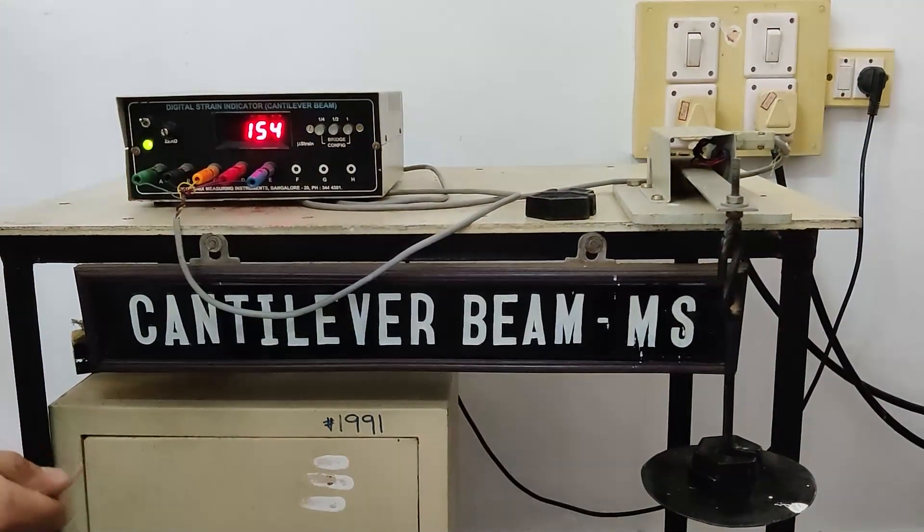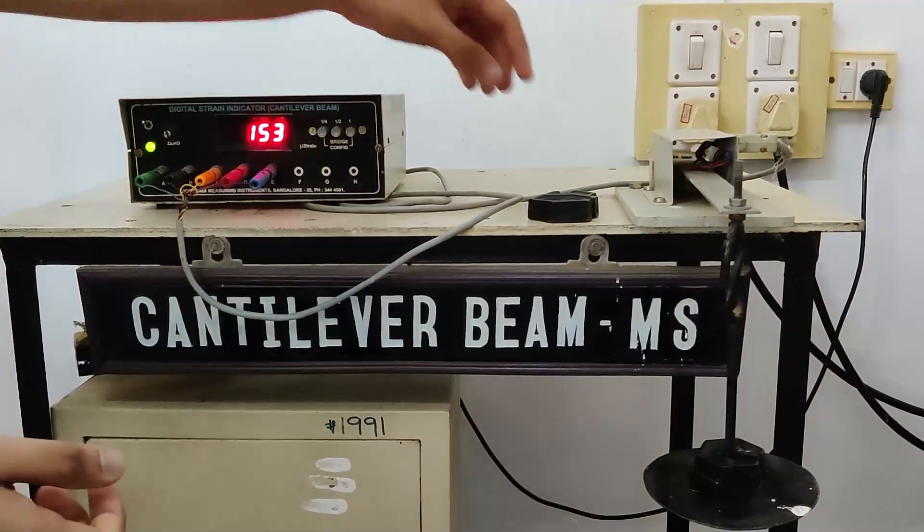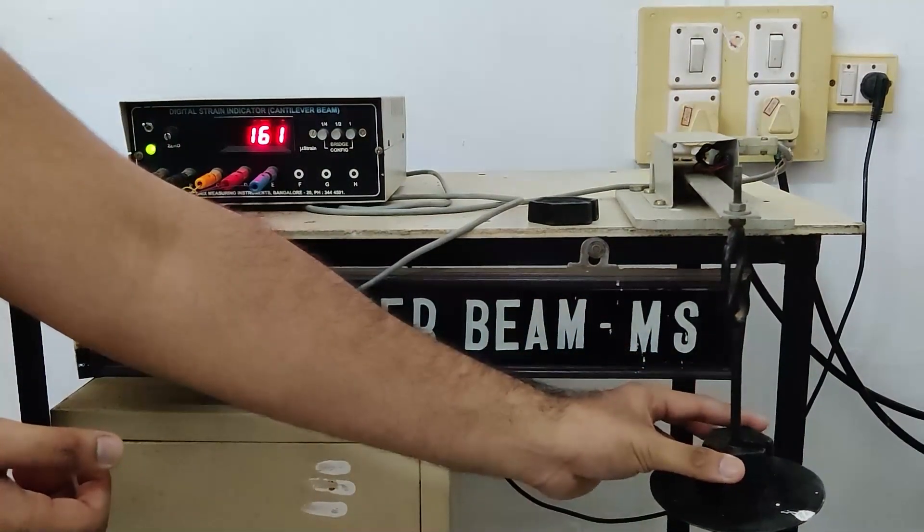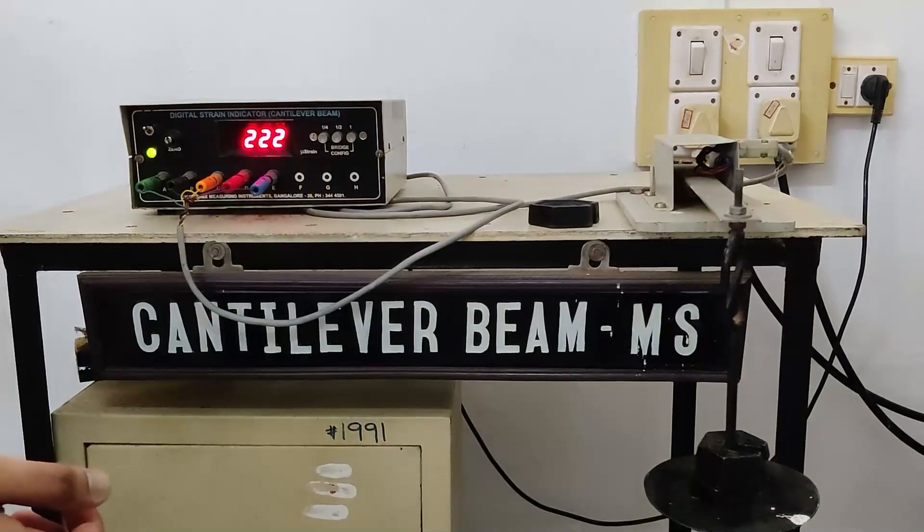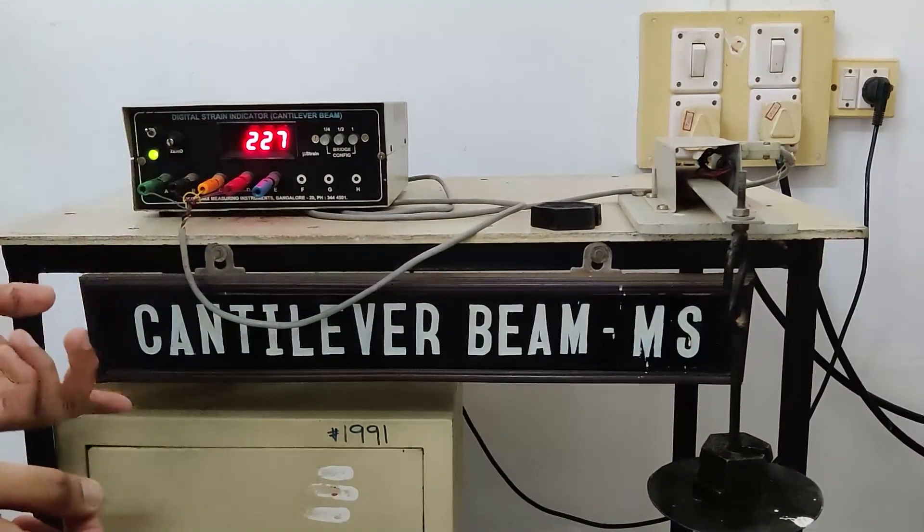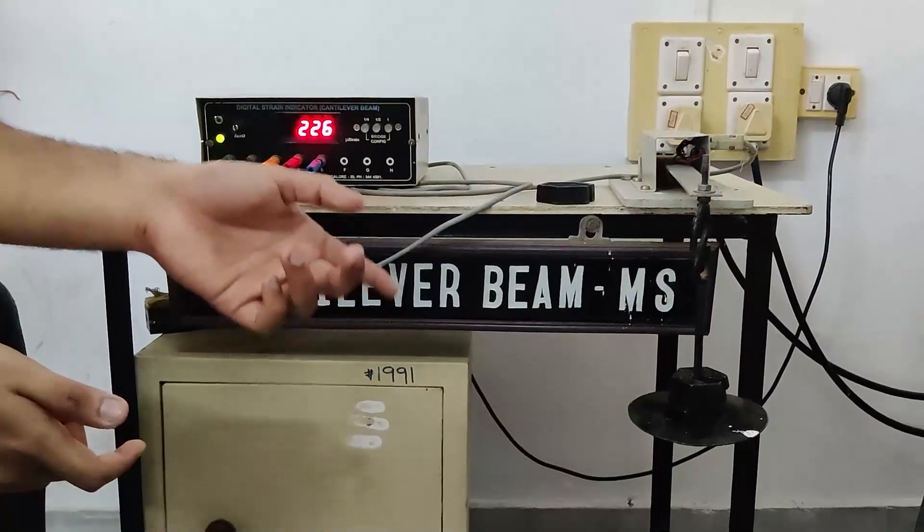Now the weight, the values again increase. Like that we add another 100 grams, this is totally of 300 grams. Now you can see the values again increasing. Like that we keep on adding weights.